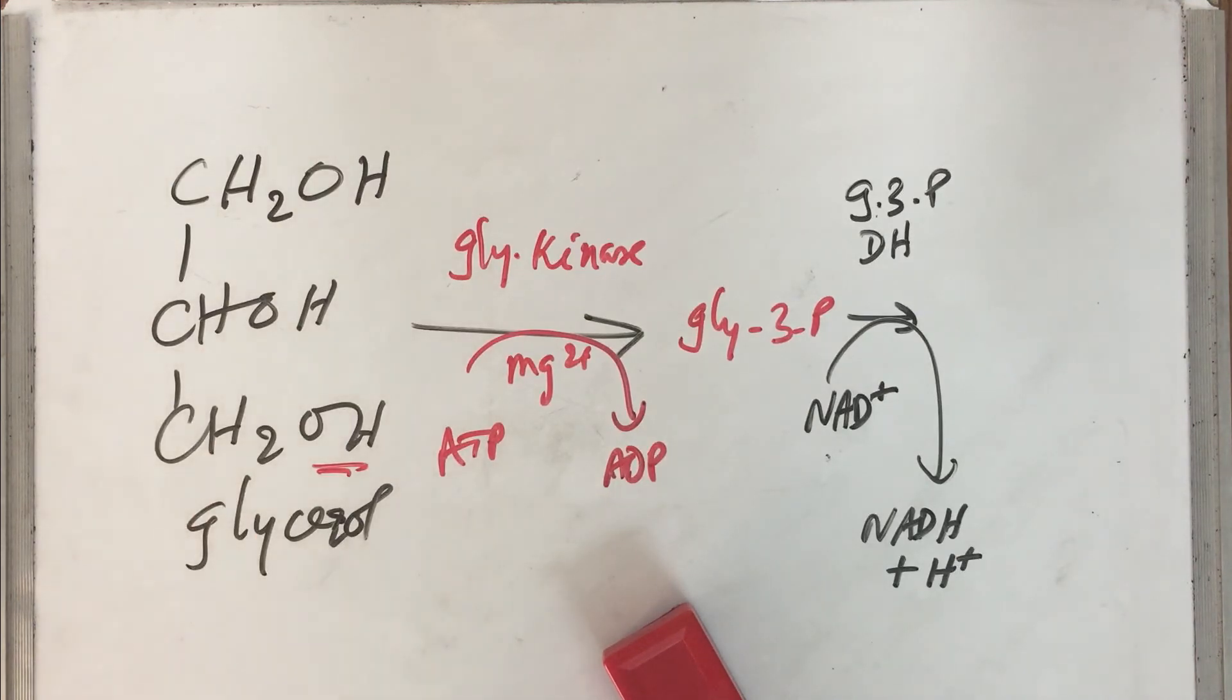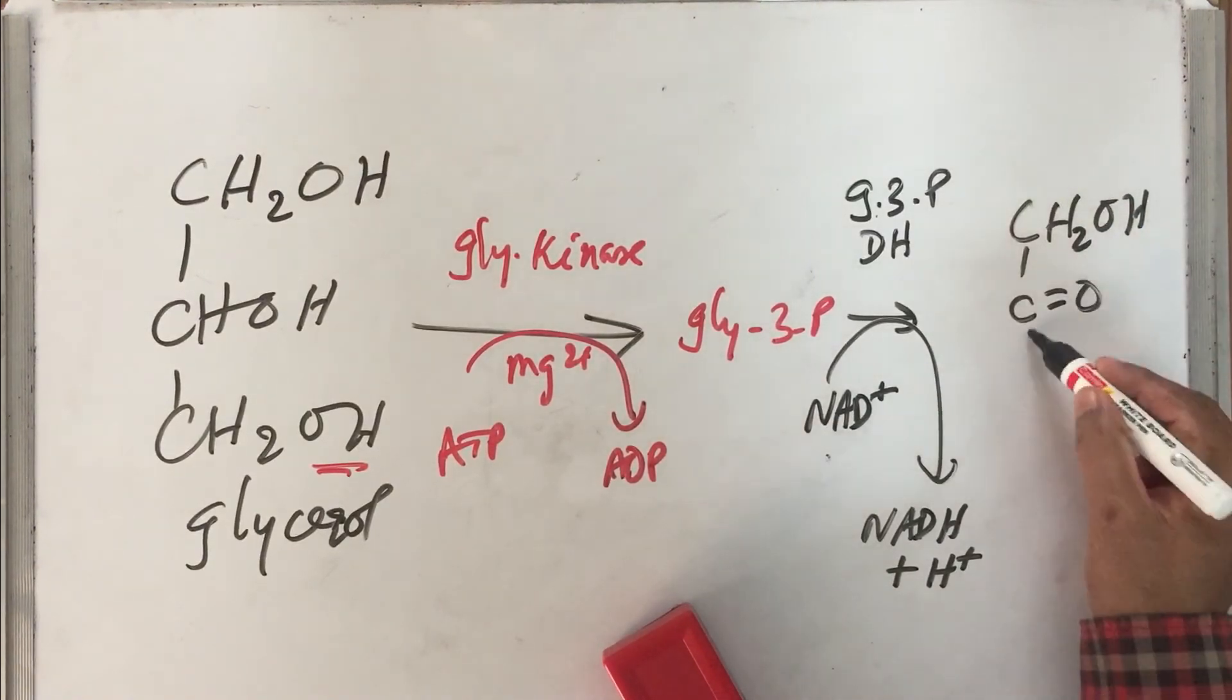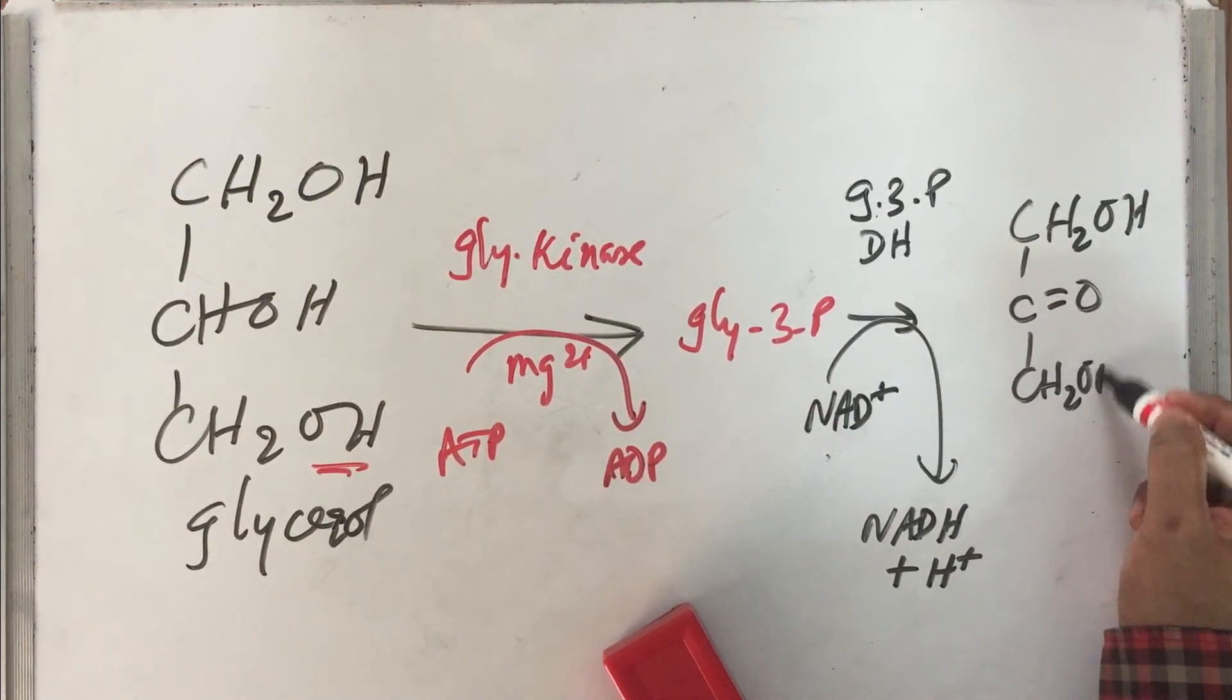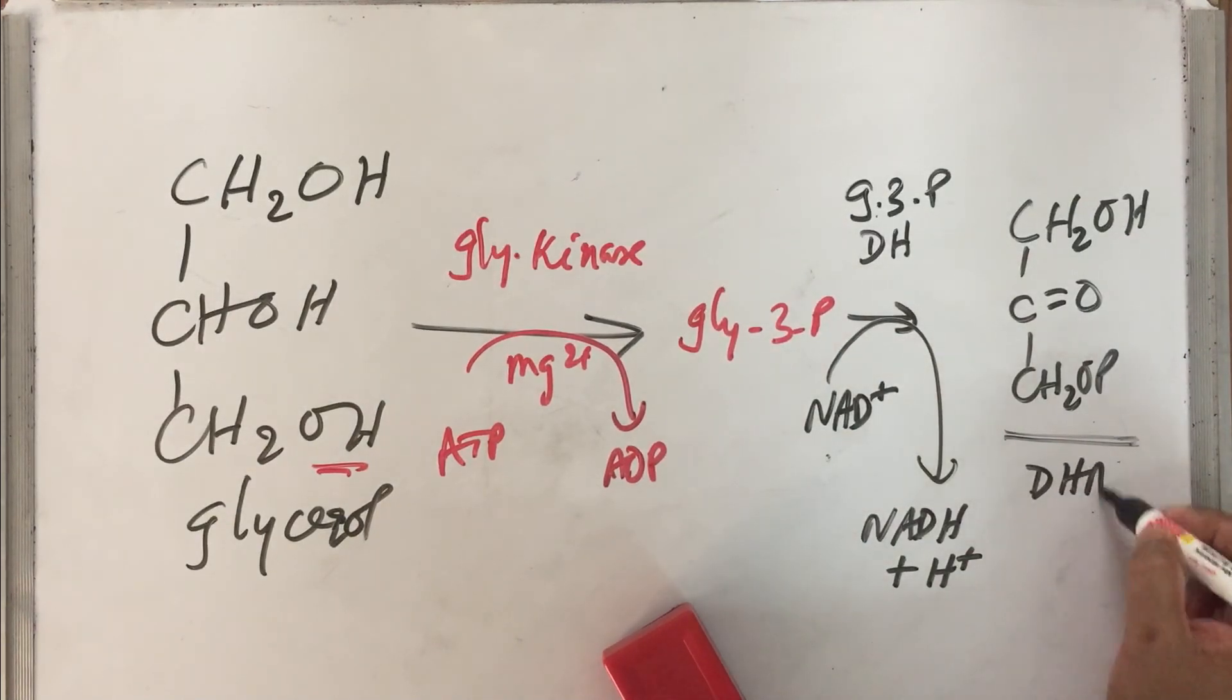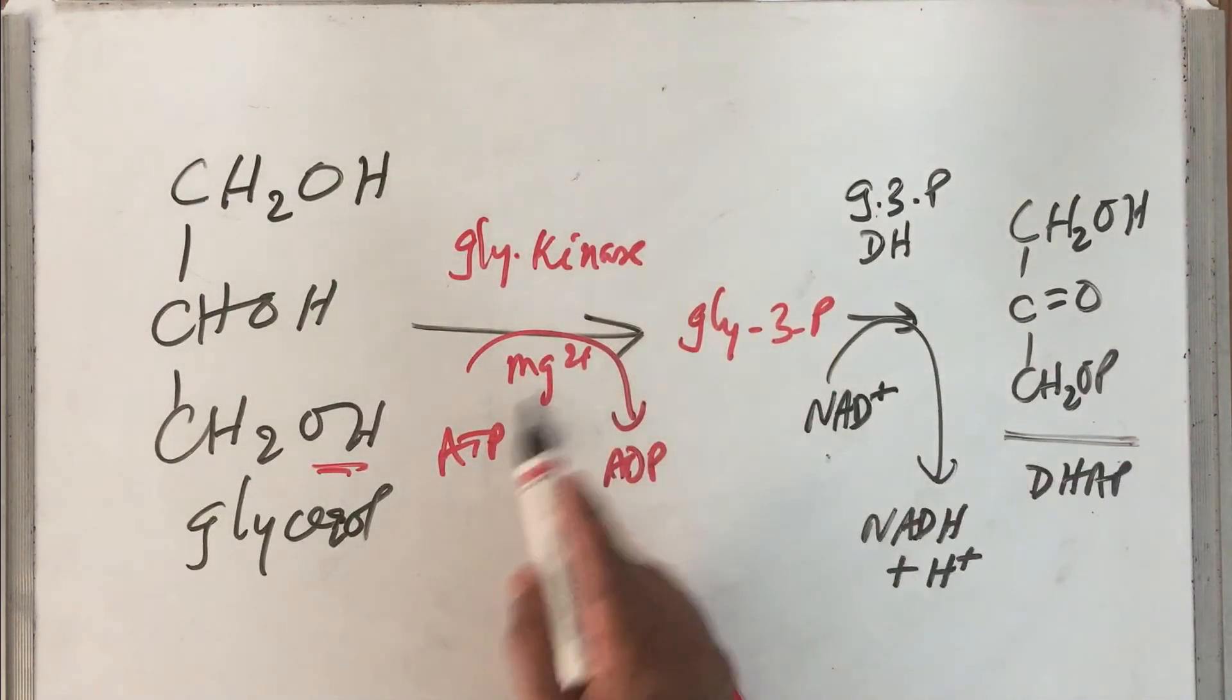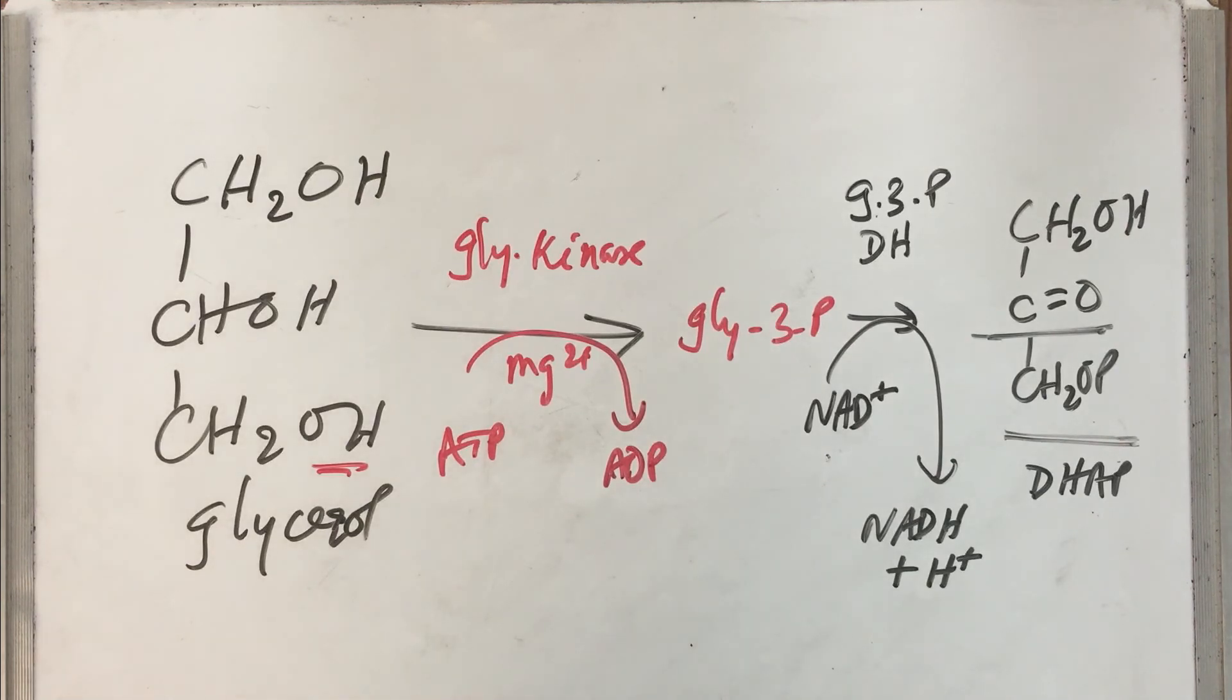In the resultant product, the structure is CH2OH, C=O, CH2OP. This molecule is called dihydroxy acetone phosphate. We have removed two hydrogen from the second carbon, so that's why it is dihydroxy acetone phosphate. Now remember, dihydroxy acetone phosphate is one of the intermediates in the gluconeogenic pathway, so therefore this will be taken care of.